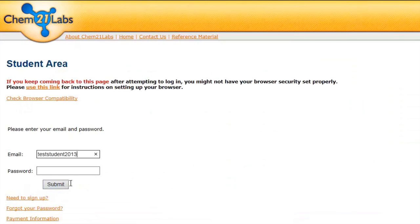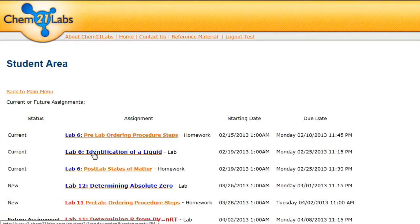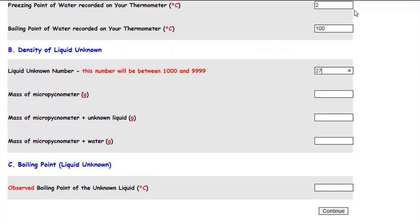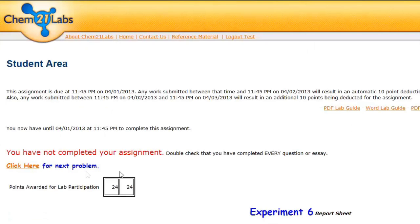Go to www.chem21lab.com and log in as a student. Click the view assignments link and select a current assignment. Enter your collected lab data and click the continue button. Review the entered data for mistakes and click the confirm button.